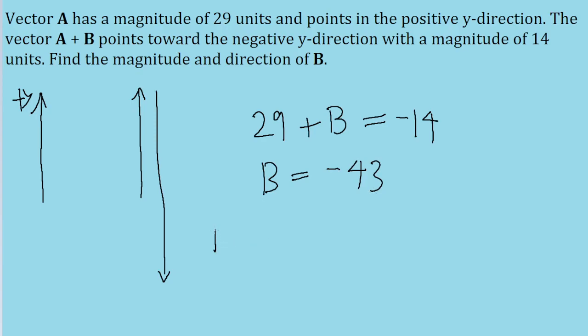So this means that vector B has a magnitude of 43 units and it is directed in the negative y direction.